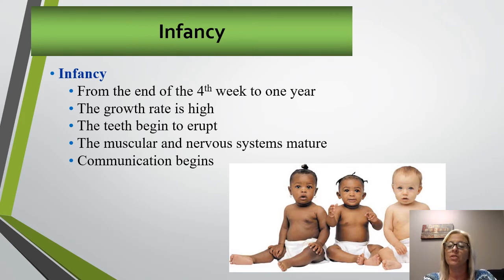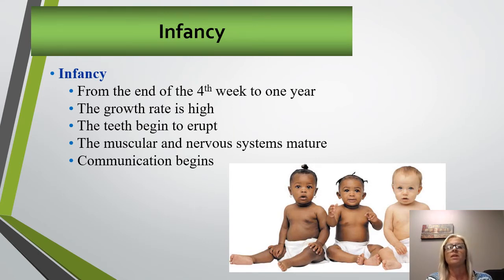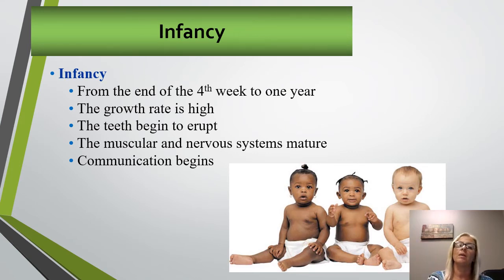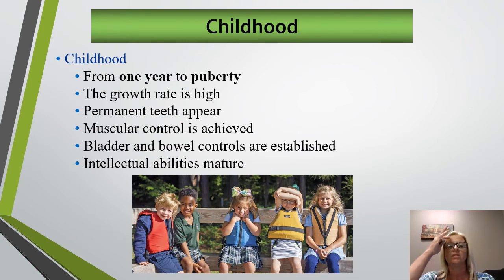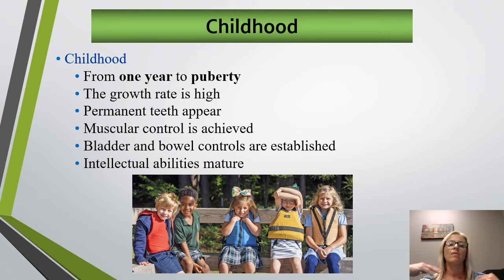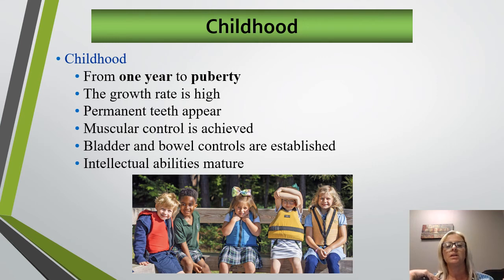Infancy occurs from the end of the first month throughout the first year. In this stage, growth occurs quickly — you can even triple the birth weight. As the muscular and nervous system matures, coordinated muscular activities become possible: rolling over, sitting up, beginning to walk. They're able to visually follow and track objects, reach for and grasp objects, and stand up. Adequate nutrition and vitamins are very important to keep up with the very high growth rate. Childhood is the period from one year extending until puberty, where the child learns to communicate, speak, read, write, and think, with emotional maturity occurring and developmental milestones like permanent teeth appearing.